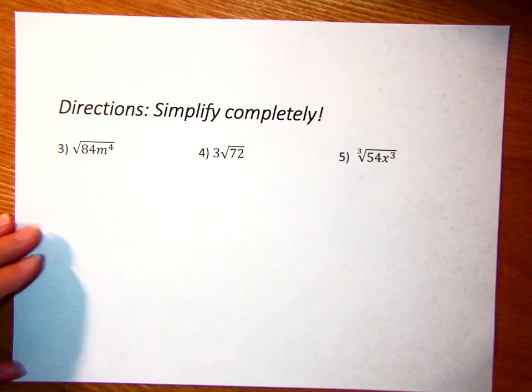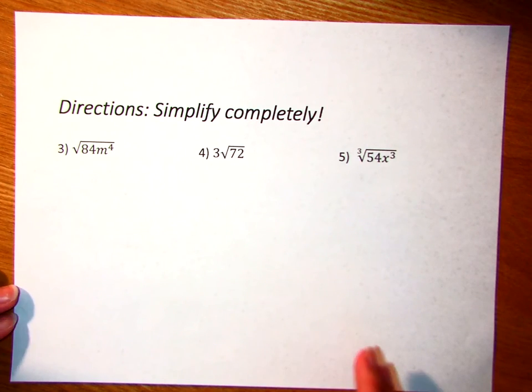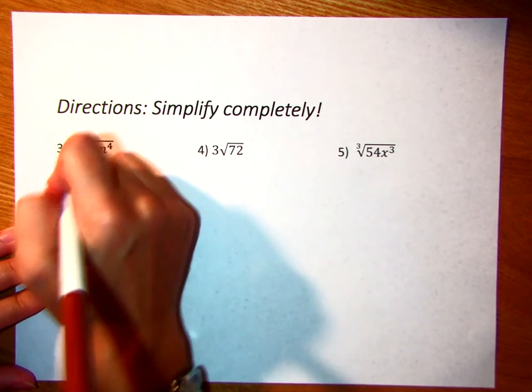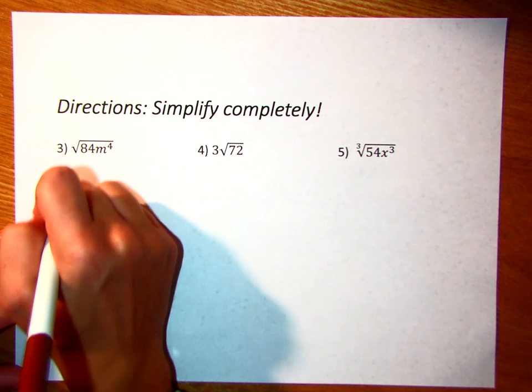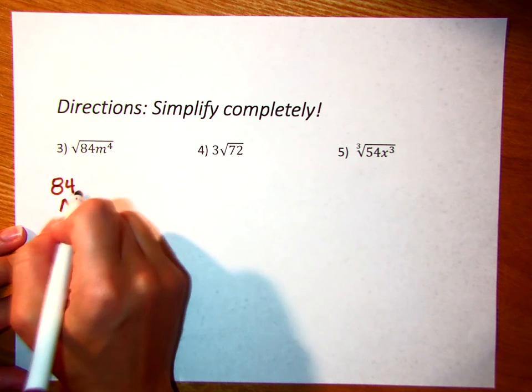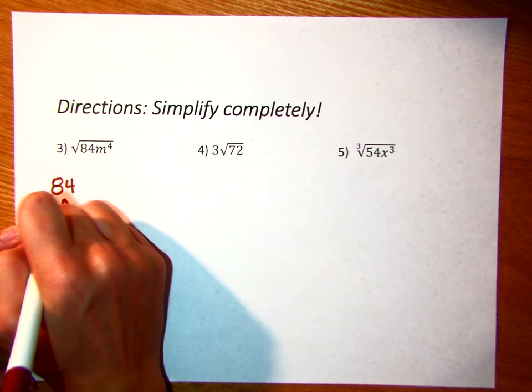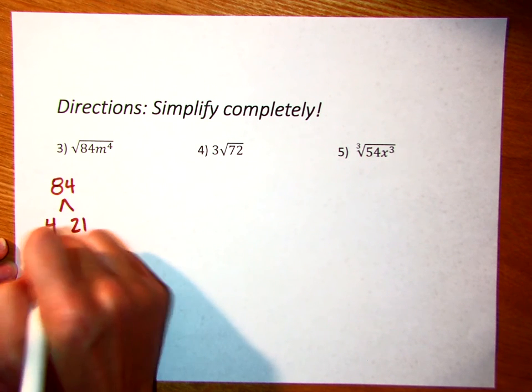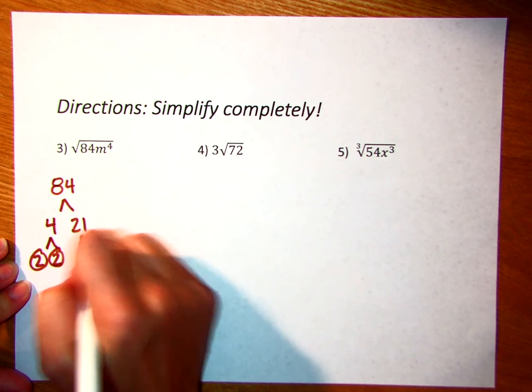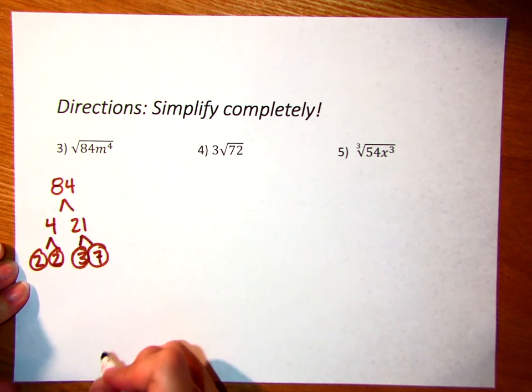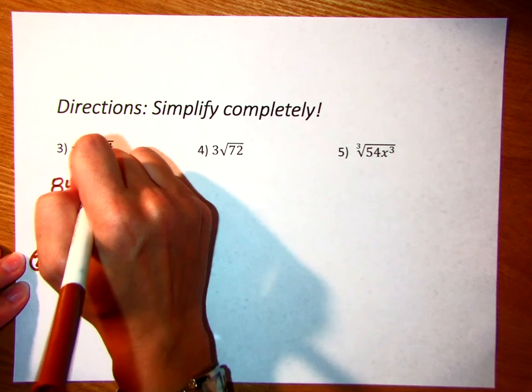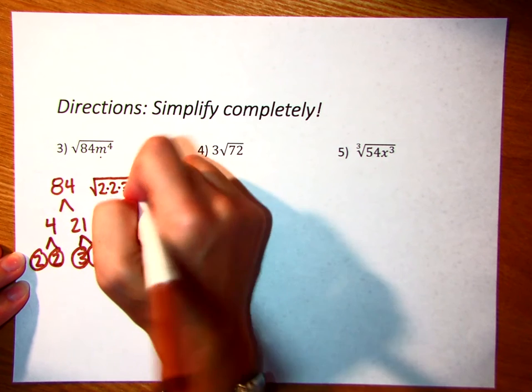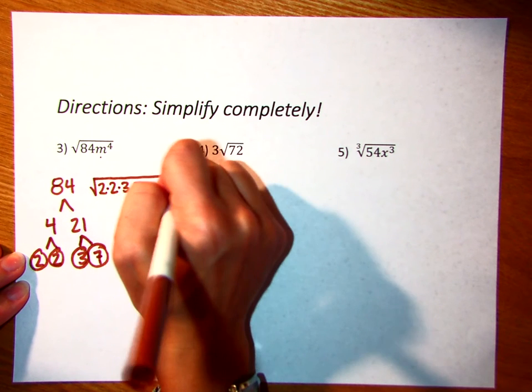On number 3, this time we have a combination of letters and numbers. So on number 3, we're going to go ahead and do the prime factorization of 84. And so 84, I can see that's divisible by 4. So I could say 4 times, 4 goes in there 2 times, it goes in there 1. So 4 would be the factors of 2 times 2. And 21 would be 3 and 7. So these are all prime now. So what I can do now is I can go back inside and I can write my factors starting with 2 times 2 times 3 times 7. And then I have 4 M's, 1, 2, 3, 4 M's.